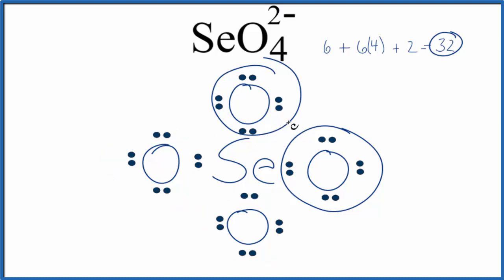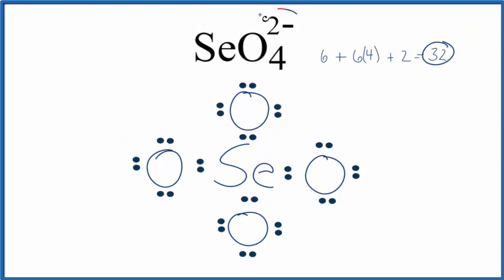The problem is that our formal charges, we'd like them to be as close to 0, or in this case, as close to the charge on the ion. Right now, this is what our formal charges look like. And if we add them all up, we'll have this 2-. We'd much rather get these numbers closer to 0, while still adding up to 2-.